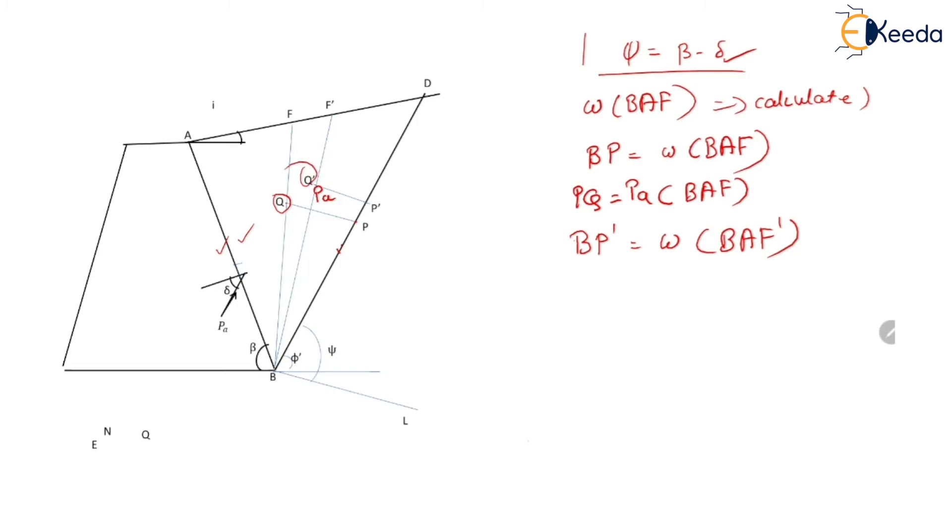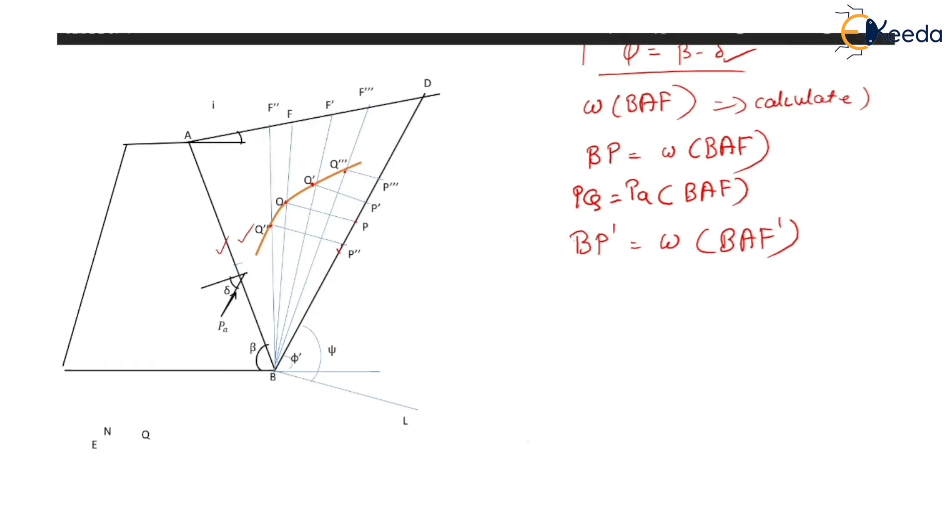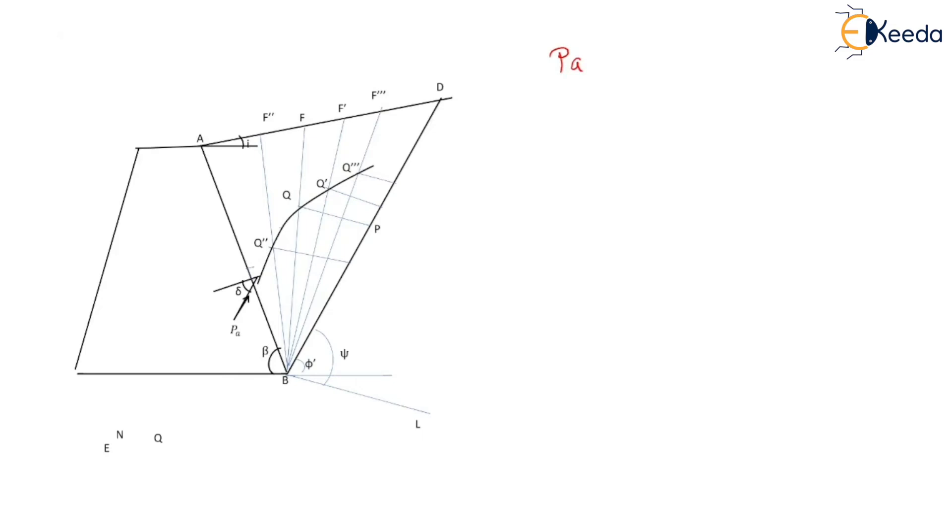So same way several failure surfaces are assumed and corresponding values of Q dash, Q double dash are obtained. So these points are connected together with the help of smooth curve. This curve is known as Coulomb's curve. Now let us draw a tangent to this curve which is also parallel to line BD. So here a dotted line shows a tangent which is also parallel to BD.